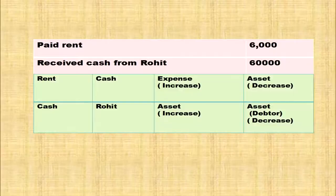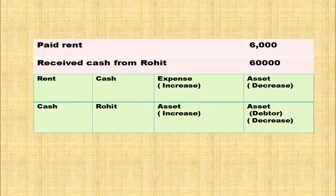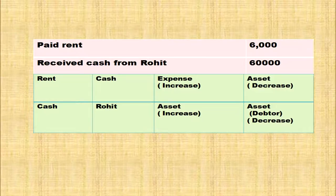Paid rent. Rent is an expense and cash is going from the business. Expense increases — it will be debited. So, rent account is debited. Cash is an asset and it is decreasing, so it is credited. Rent account: debit; cash account: credit.